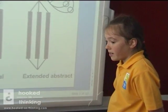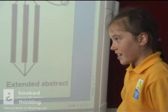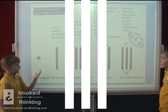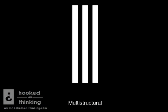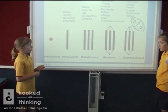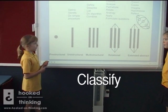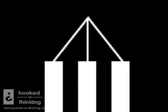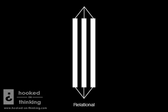Multistructural tells you more information about what direction you're looking at. You can combine things with multistructural because you've got more than one thing. Relational is a really good one because you can do part-whole and classify. You've got multistructural but you're able to relate things.